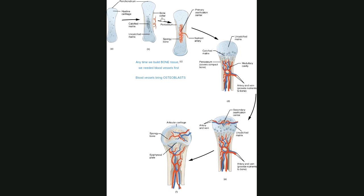Once I've started to build that bone collar, the cells in the middle are really going to start dying — the inside of the model is just done because no more nutrients get inside. At that point, we bring in our nutrient artery into the middle of the model. This part of the bone model is called the shaft of the bone, or in anatomy terms, the diaphysis.